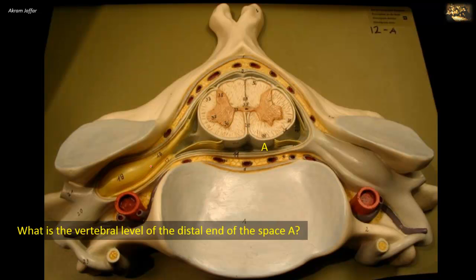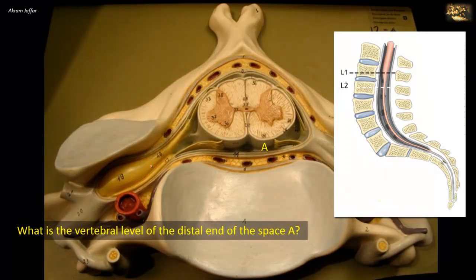What is the vertebral level of the distal end of space A? Space A is the spinal subarachnoid space. Although the spinal cord in the adult terminates at the level of the intervertebral disc between L1 and L2, the subarachnoid space — located between the pia and arachnoid — is filled with CSF and extends to the level of the second sacral segment, thus creating a wide subarachnoid space called the lumbar cistern.